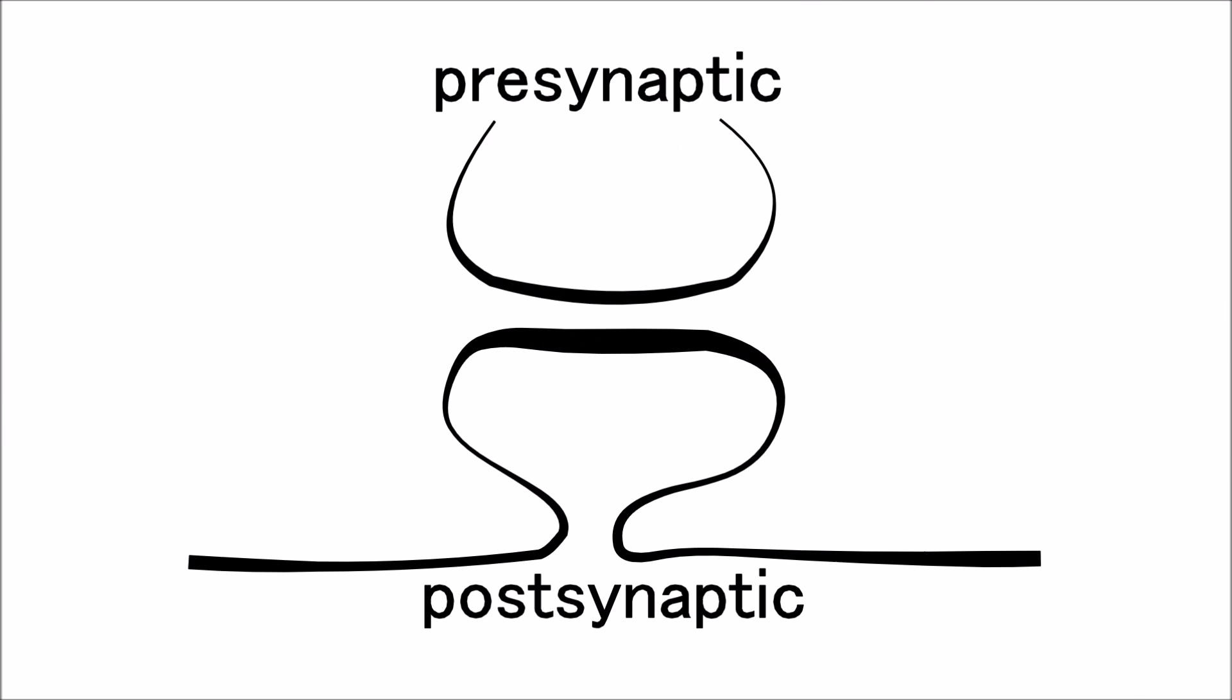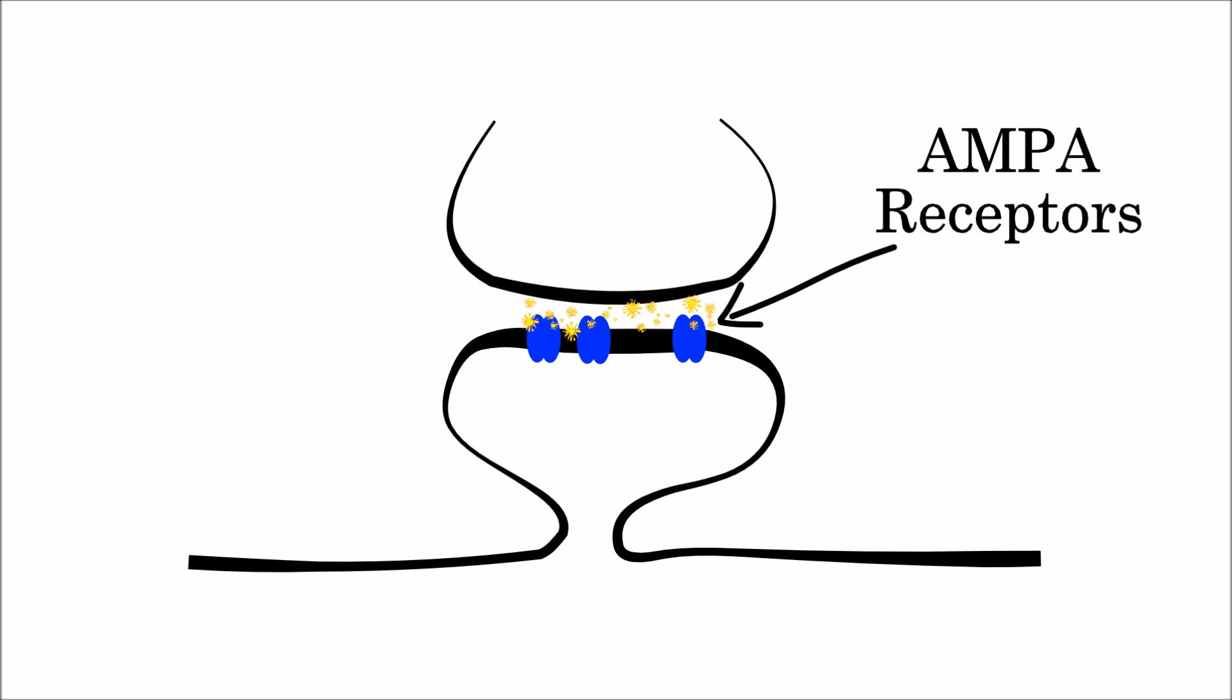The connection between the axon on one neuron and dendrite on another neuron is called a synapse. The synapse converts electrical flow into chemicals, which are released from the presynaptic side. On the postsynaptic side, these chemicals are turned back into an electrical signal by AMPA receptors, shown here in blue.